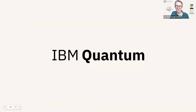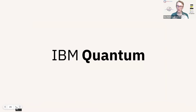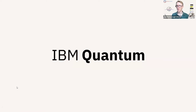Fantastic. Next up, we have the IBM challenge. The IBM challenge was focused on utilization of dynamic circuits, where you can condition quantum operations on the classical outcome of a measurement made previously in the circuit. This challenge involved using measure and feed-forward to improve existing quantum algorithms, and also exploring how noise uniquely affects these circuits and what ways you might find to characterize and mitigate that error.